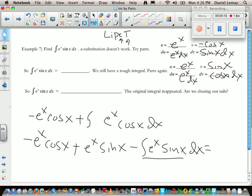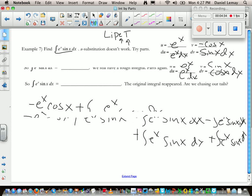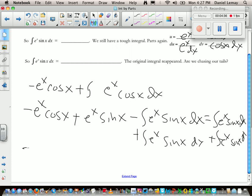So I've got this negative e to the x cosine x plus e to the x sine x minus the integral of e to the x sine x dx. Now here's the trick. Do you see how this side is equal, how this part right here is equal to our original integral? So because that's true, those are like terms. We can add this integral to both sides of this equation.